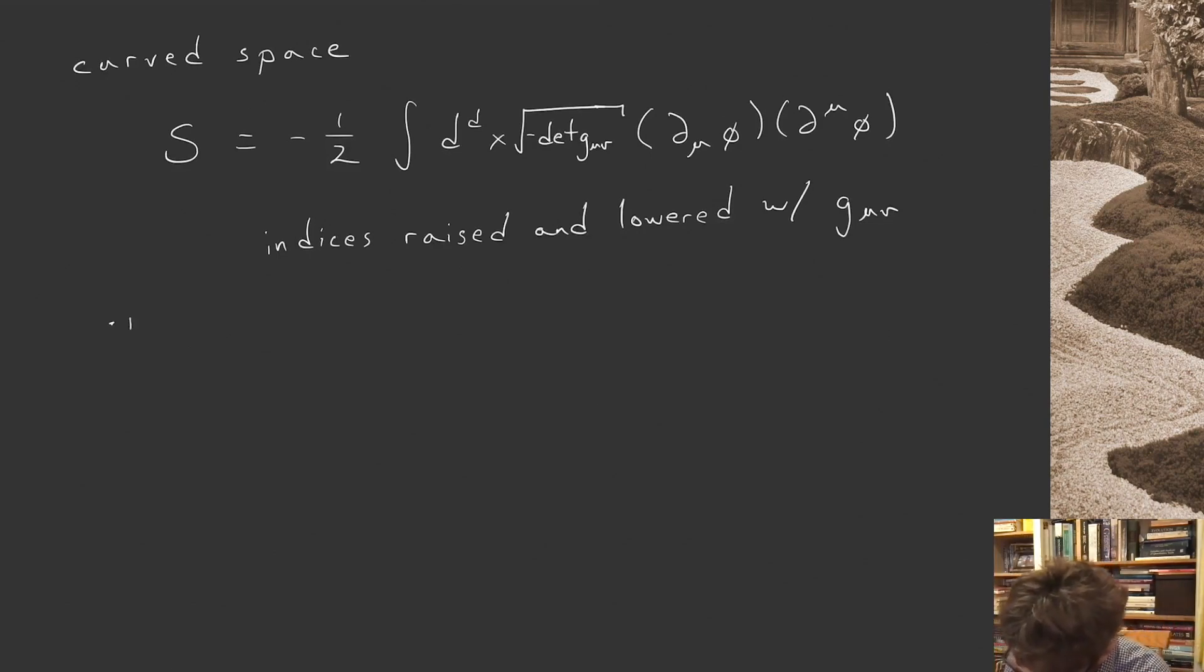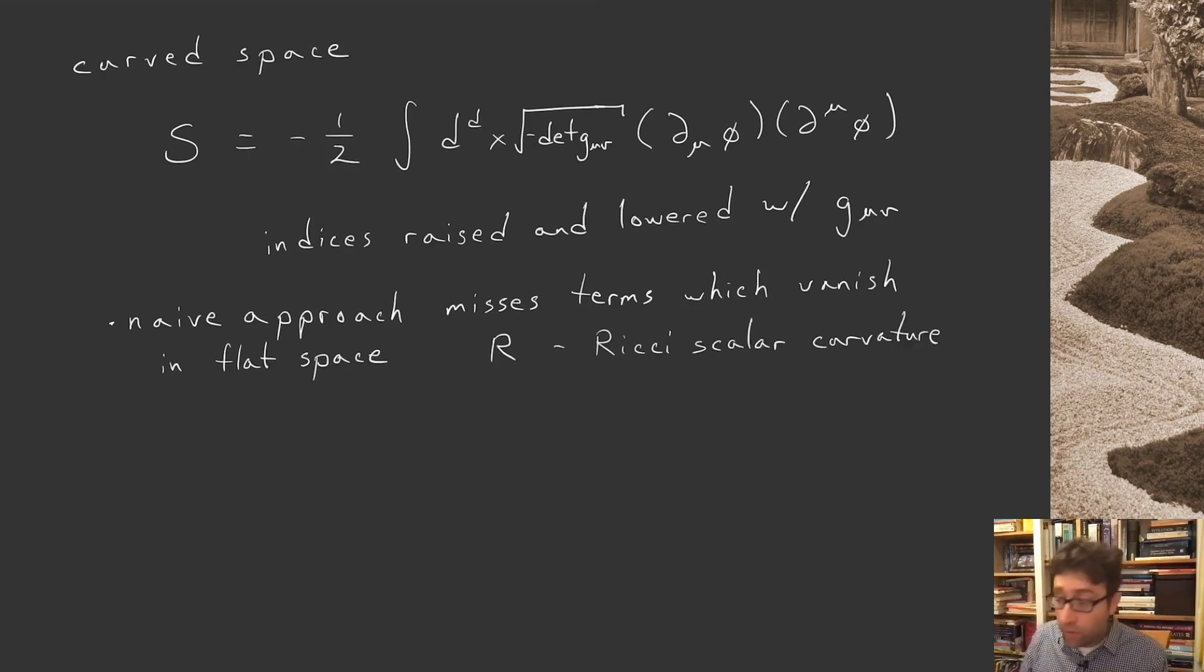This naive approach misses some things that can be quite important. It misses terms which vanish in flat space. For example, you have the Ricci scalar curvature R. You might have a term R φ² in the action. That would show up in curved space, but in flat space it wouldn't be there. For the scalar field, that term is quite important.